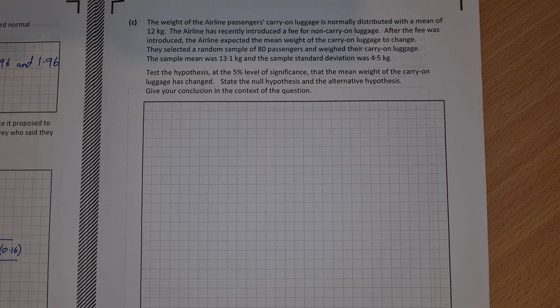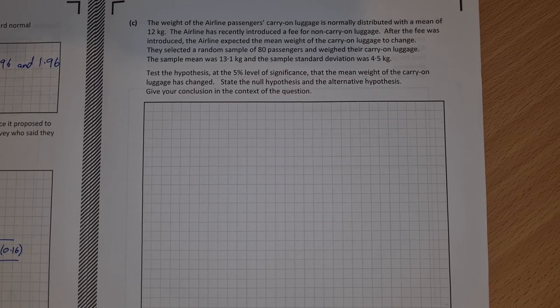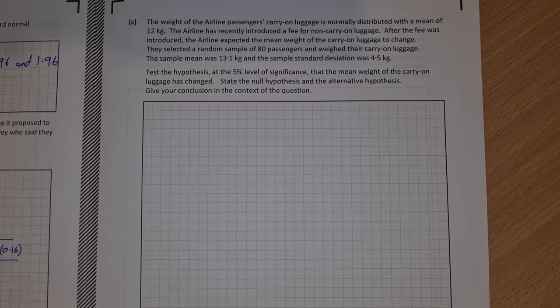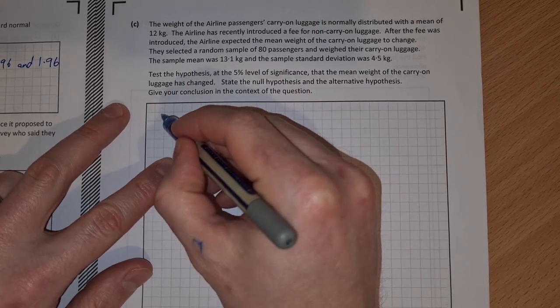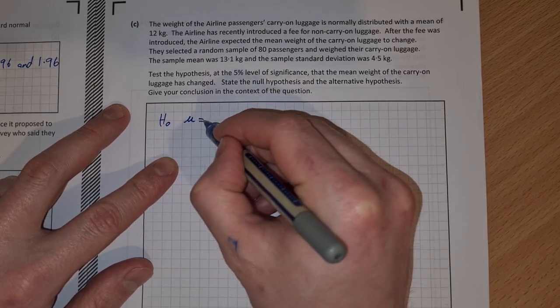Part C then. The weight of the airline passenger's carry-on luggage is normally distributed with a mean of 12 kg. The airline has recently introduced a fee for non-carry-on luggage. After the fee was introduced, the airline expected the mean weight of carry-on luggage to change. They selected a random sample of 80 passengers and weighed their carry-on luggage. The sample mean was 13.1 kg and the sample standard deviation was 4.5 kg. Test the hypothesis at the 5% level of significance that the mean weight of the carry-on luggage has changed. State the null hypothesis and the alternative hypothesis and give your conclusion in the context of the question. First of all, state the null hypothesis. The null hypothesis H0 is that the mean has not changed, so it's equal to 12 kg.